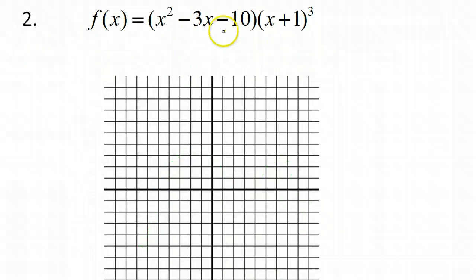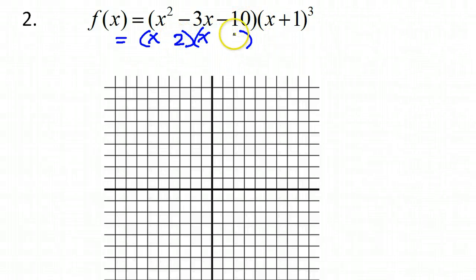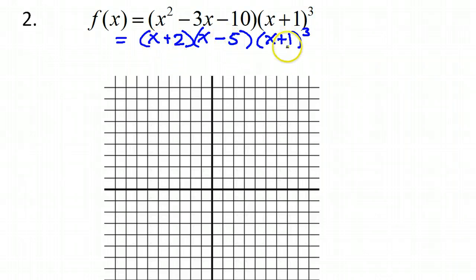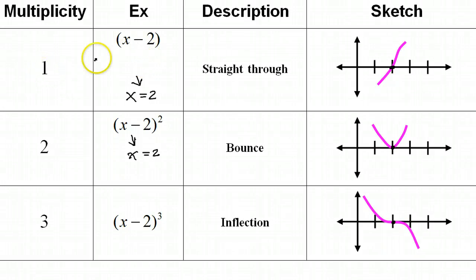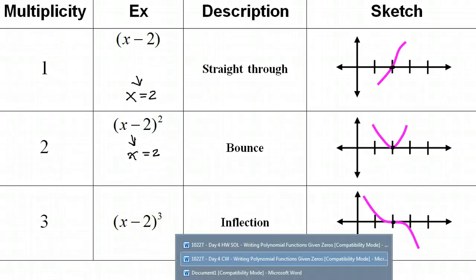Let's look at the next one. We need to finish factoring it — x squared will factor as x times x; 10 factors as 2 times 5. To get negative 3, I would need positive 2 and minus 5, and positive 2 times negative 5 makes negative 10. So I have factored this. Bringing the other part down, that's an x plus 1 to the third power. So I have two singles and a triple factor. For singles it just goes straight through; for a triple — third power — it's an inflection, which curves, flattens out, and curves its way out again.